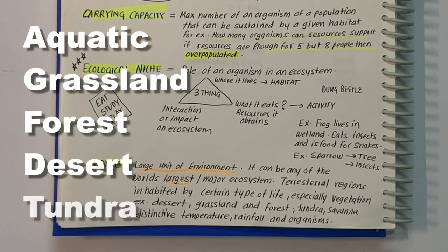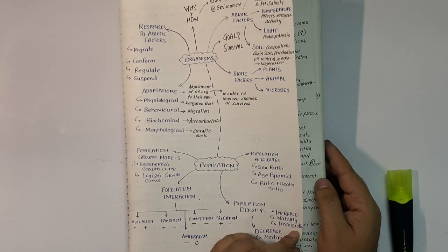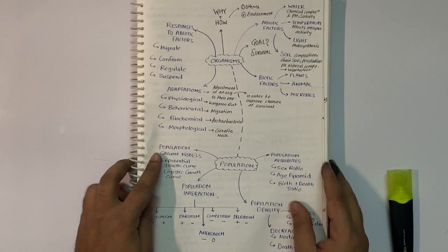These biomes can be further divided into more specific categories such as freshwater, marine water, savannah, tropical rainforest, temperate rainforest, taiga and so on. Now let's move to the next subtopic: major abiotic factors.